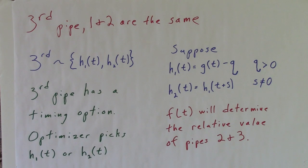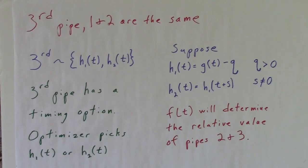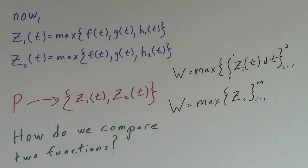f of t will determine the relative value of pipes 2 and 3. Our optimal rule set function has now created two zenith functions, since the third pipe has a timing option. We still need to compare the possible derivatives at each point in time. The definite integral is the most suitable way to compare the zenith functions. We want the zenith function with the largest integral, so we compare all of the generated numbers. The largest number in the set is the amount of water in the tub.